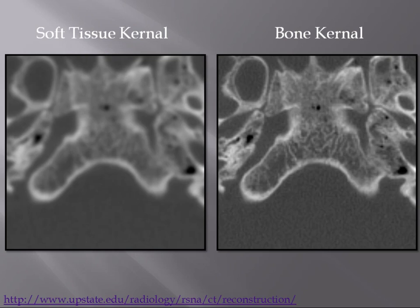Here we have two images side by side from the same acquisition but reconstructed with different filters. On the left is the soft tissue kernel, and on the right is the bone kernel. On the soft tissue image, you really lose the detail of the bony trabecula at the base of the skull. On the bone kernel, the fine septations of the trabecula are very perceptible, and you can see fat density areas between the trabeculations — superior spatial resolution. The bone kernel image does show a more pronounced quantum mottle pattern across the whole image, so there is a little trade-off.